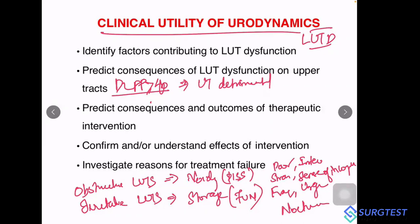The next point is to predict the consequences and outcomes of therapeutic intervention. This is a controversial point — nowhere in guidelines does it say you must do urodynamic evaluation before every invasive treatment. For example, for stress urinary incontinence with urethral hypermobility not managed conservatively, you can proceed with a midurethral sling without urodynamics. Similarly for TURP. But if the diagnosis is muddied, urodynamics can help understand the disease. Urodynamics cannot predict outcomes of therapeutic intervention to a great extent as of now.